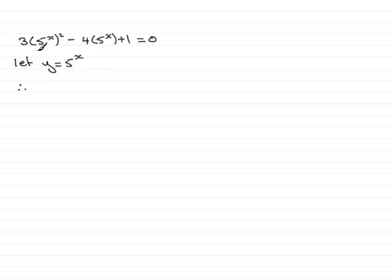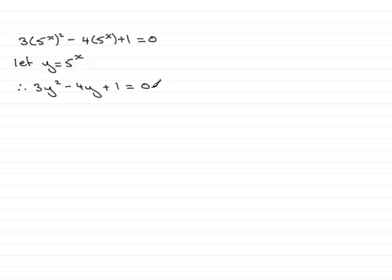So therefore this equation becomes 3y squared minus 4y plus 1 equals 0. You can see we've got a quadratic equation — this is a quadratic equation in y, whereas the original equation is a quadratic equation in 5 to the power x.